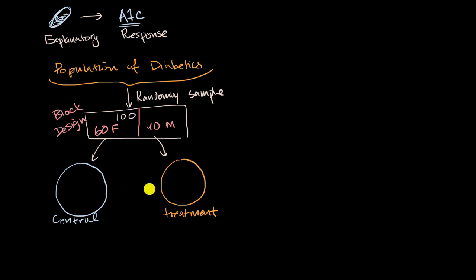So once you have folks in both of these groups, what you would probably want to do is measure their A1C at the beginning. You could view that as a baseline. And then over the course of the experiment, you would give the pill to the treatment group.